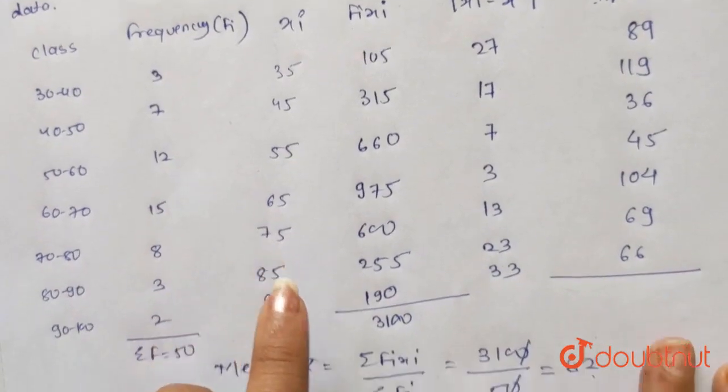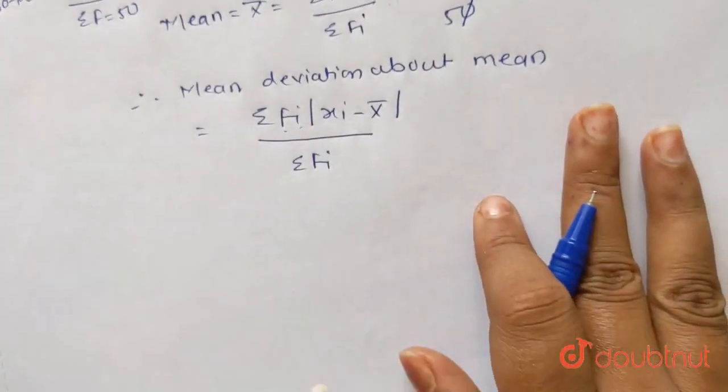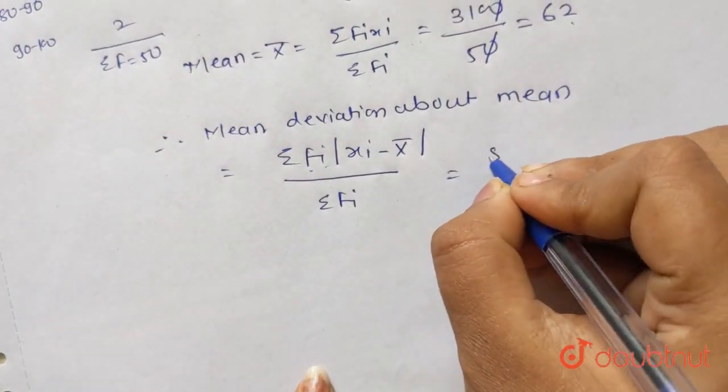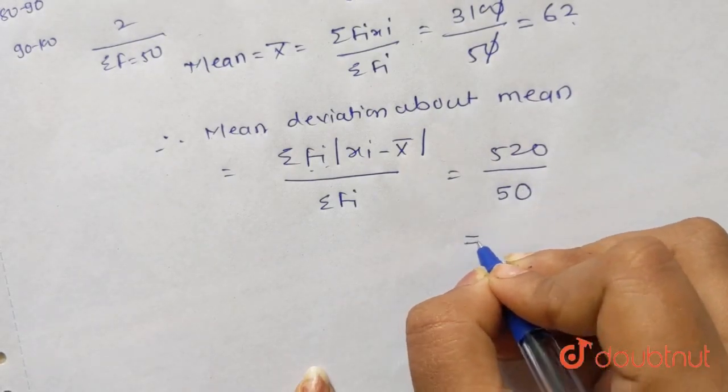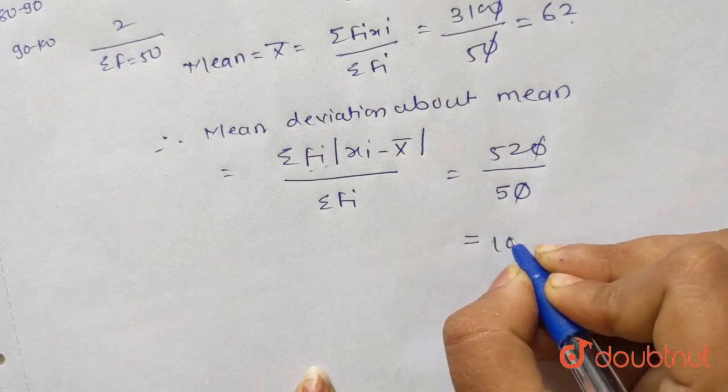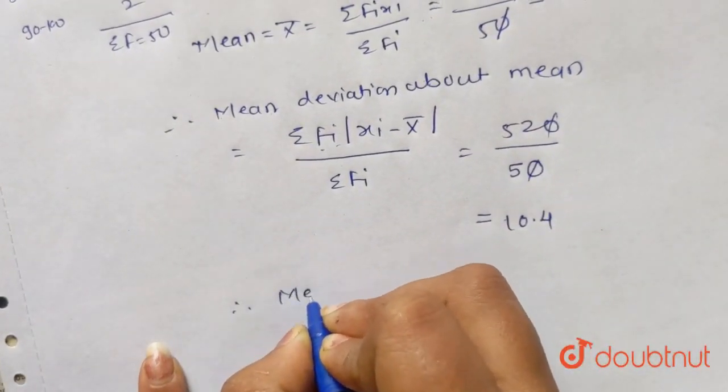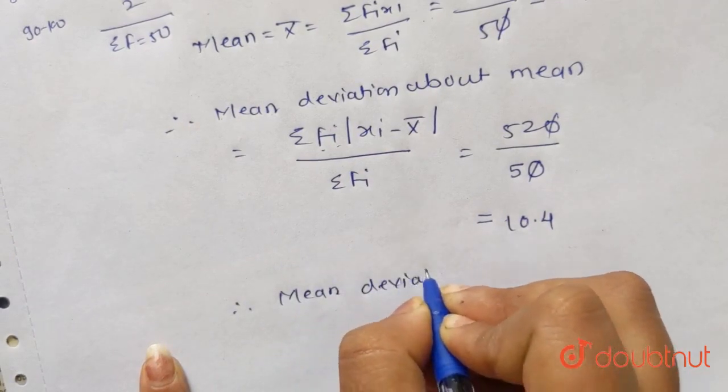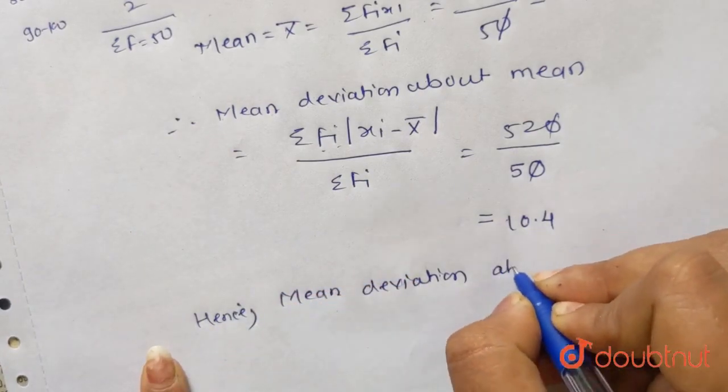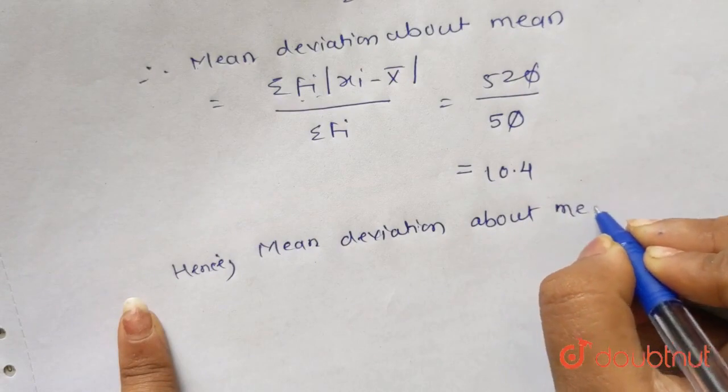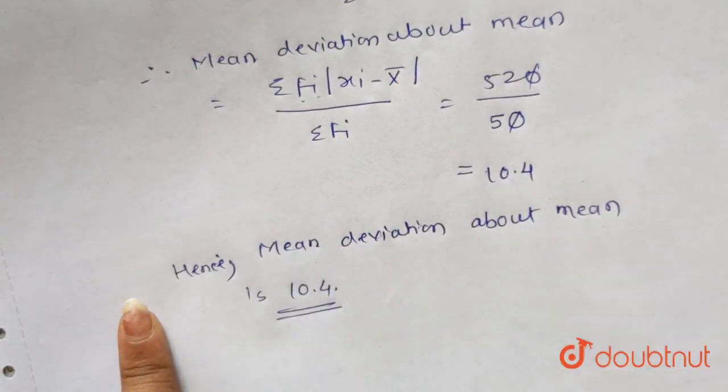The addition of all these values will be 520. Now substitute this value in the formula. Here it will be 520 divided by sum of FI, 50, which equals 10.4. Hence, mean deviation about mean is 10.4, and this is your required solution.